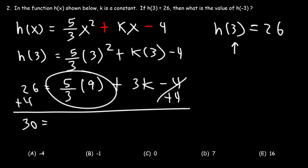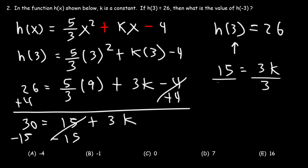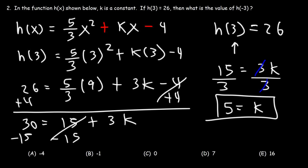Now 5 over 3 times 9 — you could do 5 times 9 divided by 3, or 9 divided by 3 times 5. I prefer the second method: 9 divided by 3 is 3, and 3 times 5 is 15. Now let's subtract both sides by 15. 30 minus 15 is 15, and that's going to equal 3k. Now if we divide both sides by 3, we get 15 divided by 3, which is 5. So k is 5.